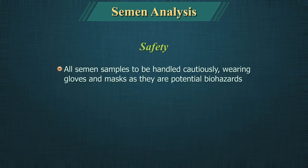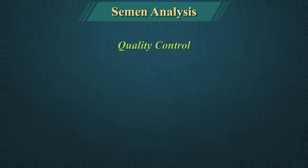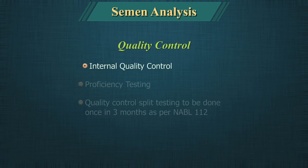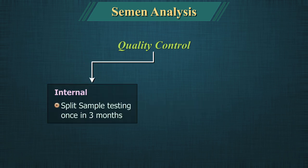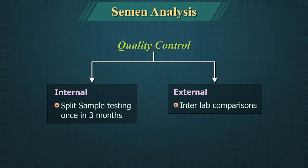All semen samples should be handled cautiously wearing gloves and masks, as they are a potential biohazard. The sample should be discarded following biological waste management guidelines after completion of the test. Quality control includes internal quality control using proficiency testing, i.e., split sample testing, which should be done regularly by two technicians on the same sample. External quality control should be carried out quarterly by inter-lab comparisons.